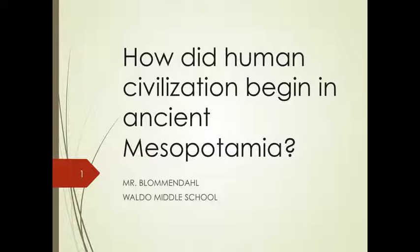Your essential question for the lesson, which should go across the top of your Cornell notes, is: how did human civilization begin in ancient Mesopotamia? Go ahead and write that down now, and then we will go on and break it down into the various things that make a civilization a civilization — that comes straight out of your History Alive book.